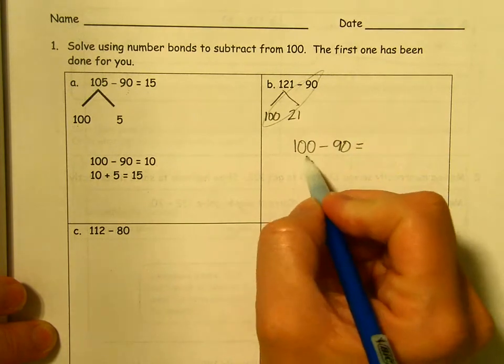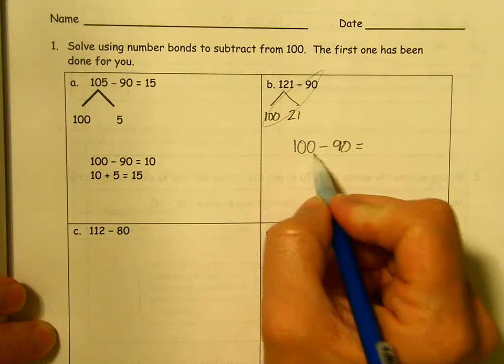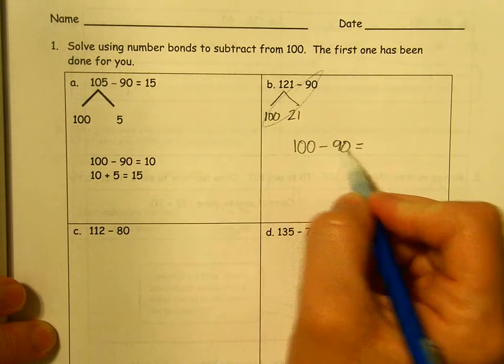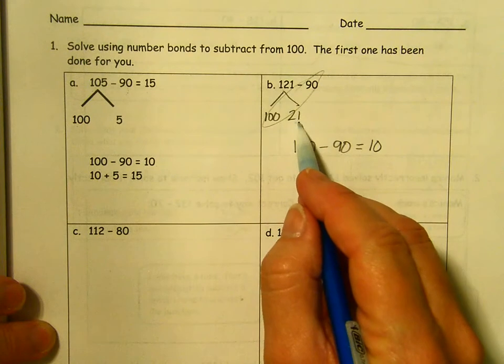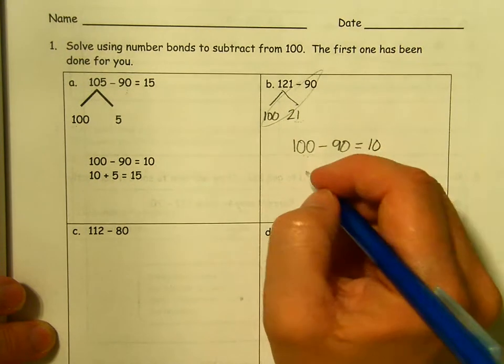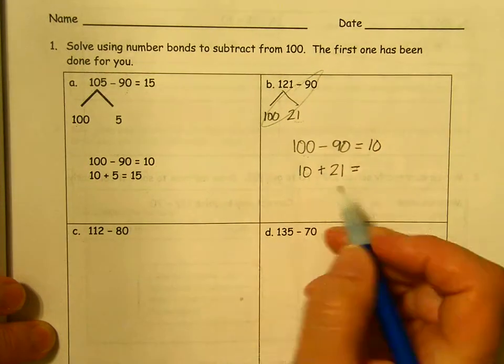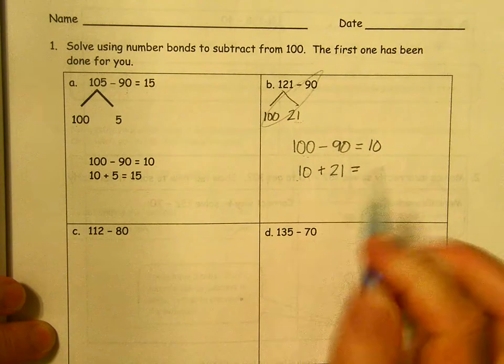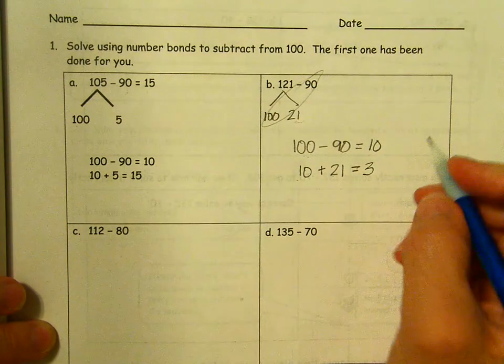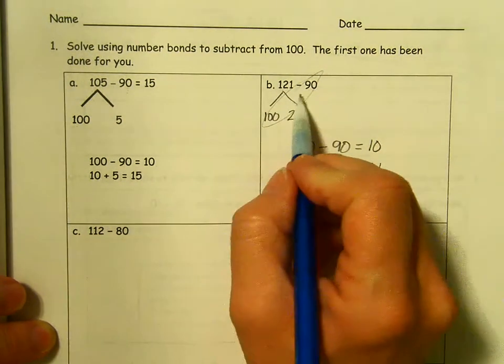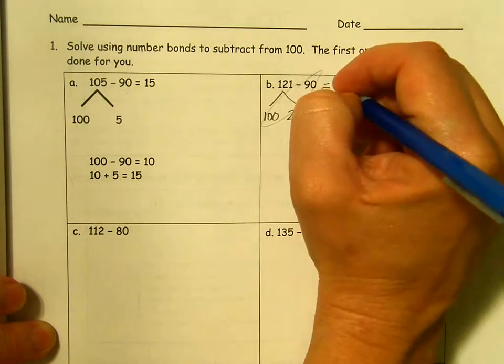So we're going to start with 100 minus 90. Again, 100 is 10 tens minus 9 tens. 10 tens take away 9 tens is 10. Then we just need to add 21 back in. So we have 10 plus 21. 1 ten and 2 tens is 3 tens. 0 plus 1 is 1. 121 minus 90 equals 31.